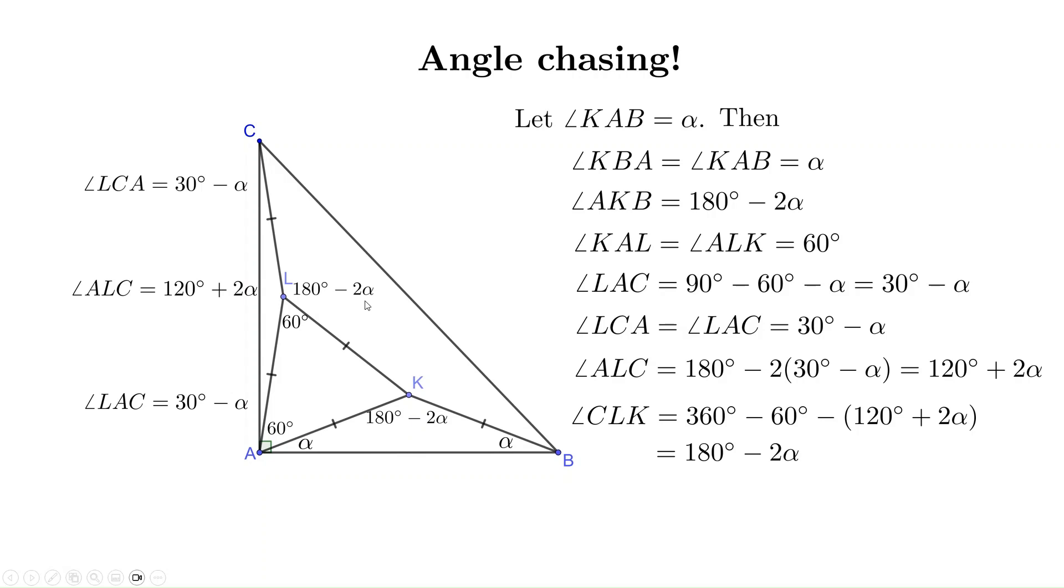Now look. Angles CLK and angle AKB, they both have measure 180 - 2α. So they are congruent.